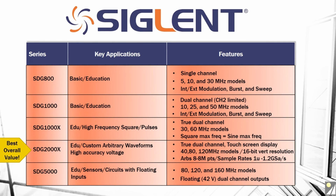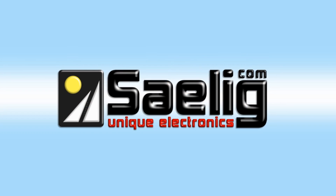Really the best overall value is going to be the SDG2000 series, primarily because of its flexibility. You can select a large number of data point sizes for every arbitrary waveform — between 8 and 8 million points — and you can adjust the sample rate output. It's a really quite flexible instrument. Thank you.